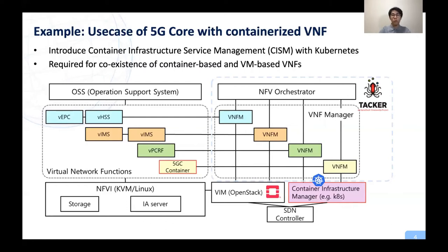Here is a use case example of TACA: 5G core with containerized VNF. We expect that many network functions on the 5G core network will be deployed as containerized applications — a mixed virtual machine and container environment. This diagram shows that vEPC, vIMS, or 5GC containers are managed from TACA with OpenStack and Kubernetes. We started to implement container support before the Ussuri release and focused more from Victoria. In ETSI NFV standard, discussion has also started on how to deploy network applications with container infrastructure service management.